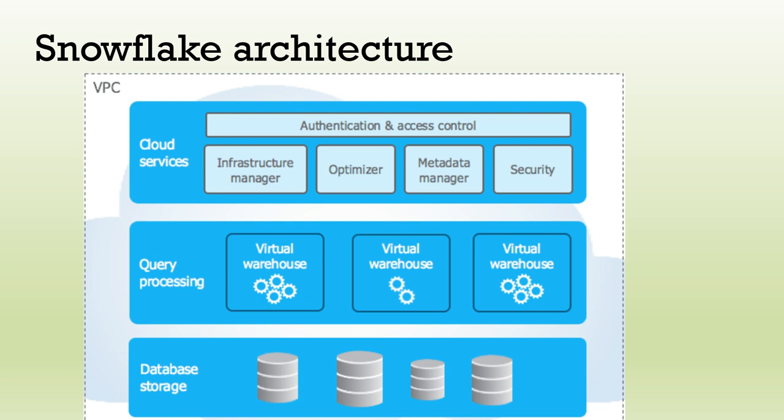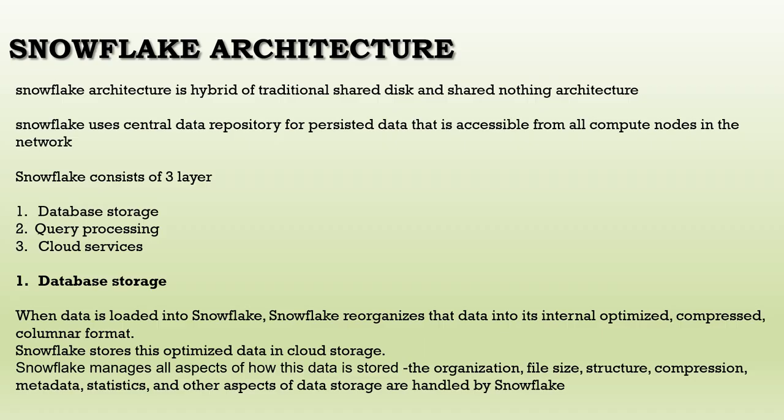This is the pictorial representation of Snowflake's database architecture. It consists of three layers: database storage, query processing, and cloud services. We'll go through each one. Basically, the Snowflake architecture is hybrid — a combination of traditional shared disk and shared nothing architecture.